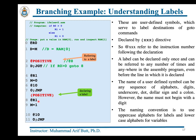The label POSITIVE is declared at line 8 but referred to at line 2, before its declaration. You can declare many labels within an assembly program, each with a unique name. A user-defined symbol name can be any sequence of alphabets, digits, underscores, dots, dollar signs, and colons, but must not begin with a digit. The convention is to use uppercase alphabets for labels and lowercase alphabets for variable names.